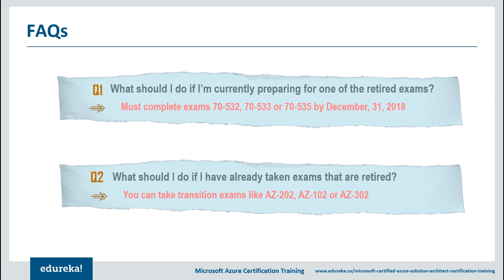The transition exam covers the gap between old certifications and what Microsoft expects for the new ones — acting as a bridge between old and new exams. AZ-300 also has a transition exam called AZ-302: the Microsoft Azure Solutions Architect Certification Transition exam. If you've already taken 70-535 and want to improve your skill set, just take AZ-302. There are also transition exams for AZ-100 and AZ-200 — refer to other Edureka videos for more on those.